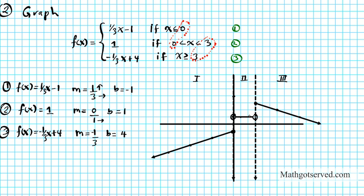See how I restricted line three to region three, restricted line two to region two, and restricted line one to region one. There goes the graph of the piecewise function.